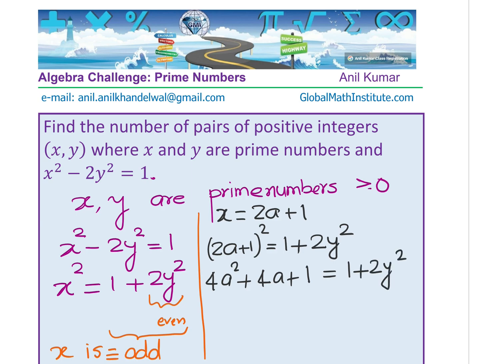Now from here, can you find the value of x and y? Clearly this plus 1 on both sides cancels. You get 4a² + 4a = 2y². We can take 4 common, then a common, getting 4a(a + 1) = 2y². Cancelling 2 from both sides, we get 2a(a + 1) = y².